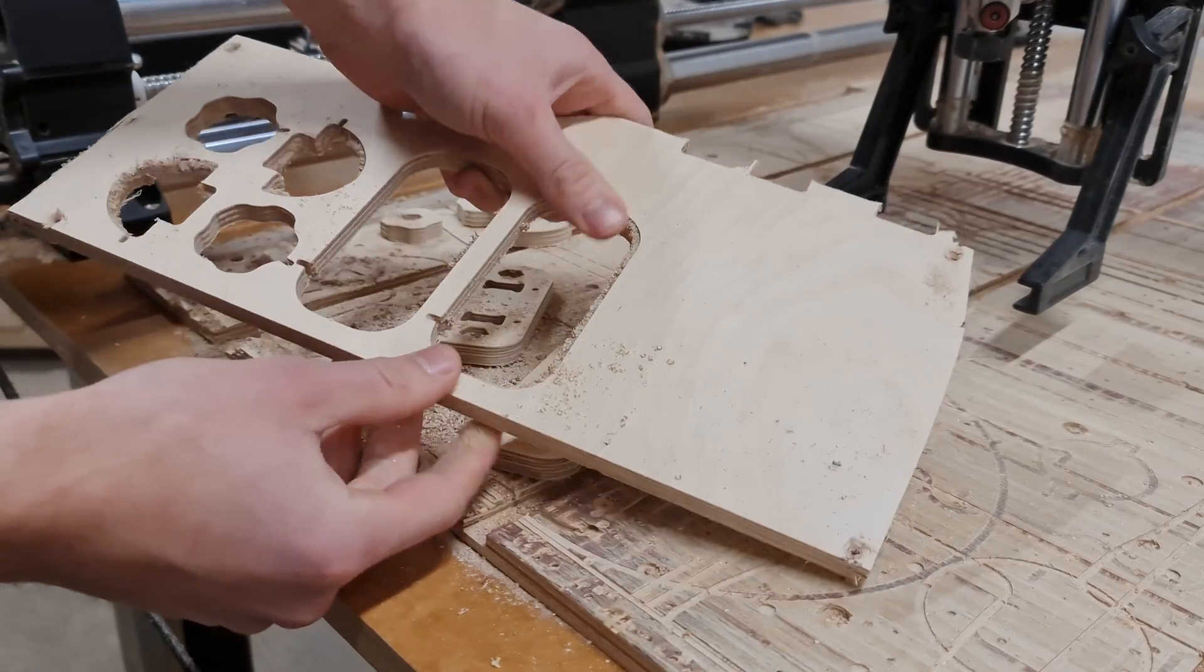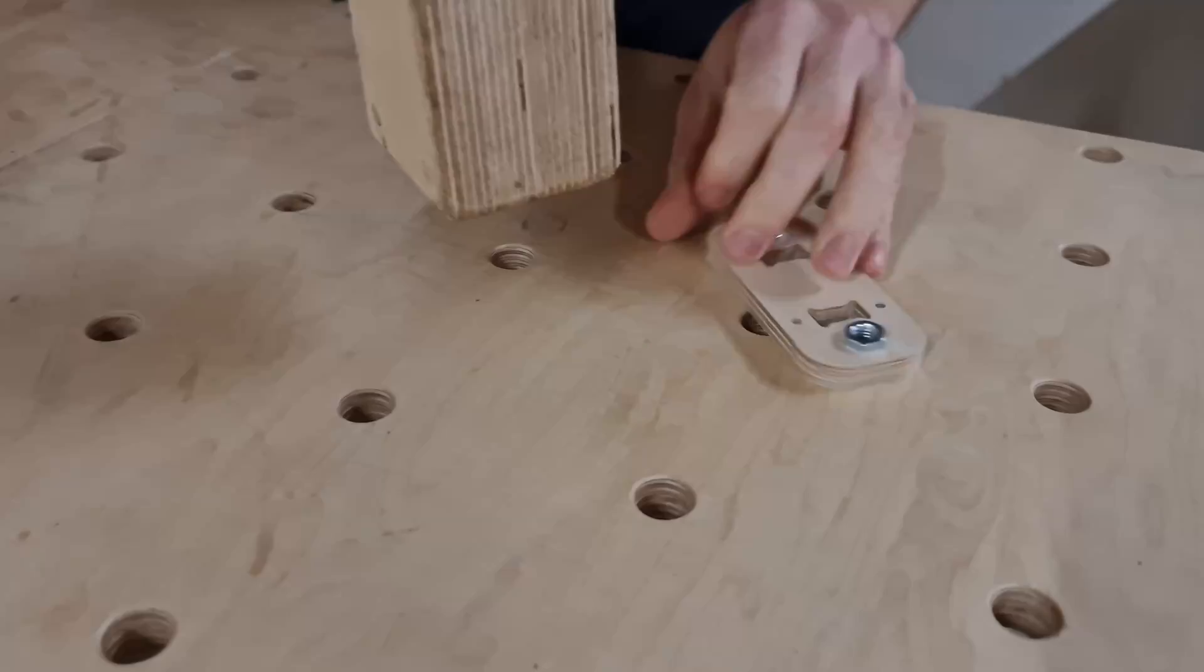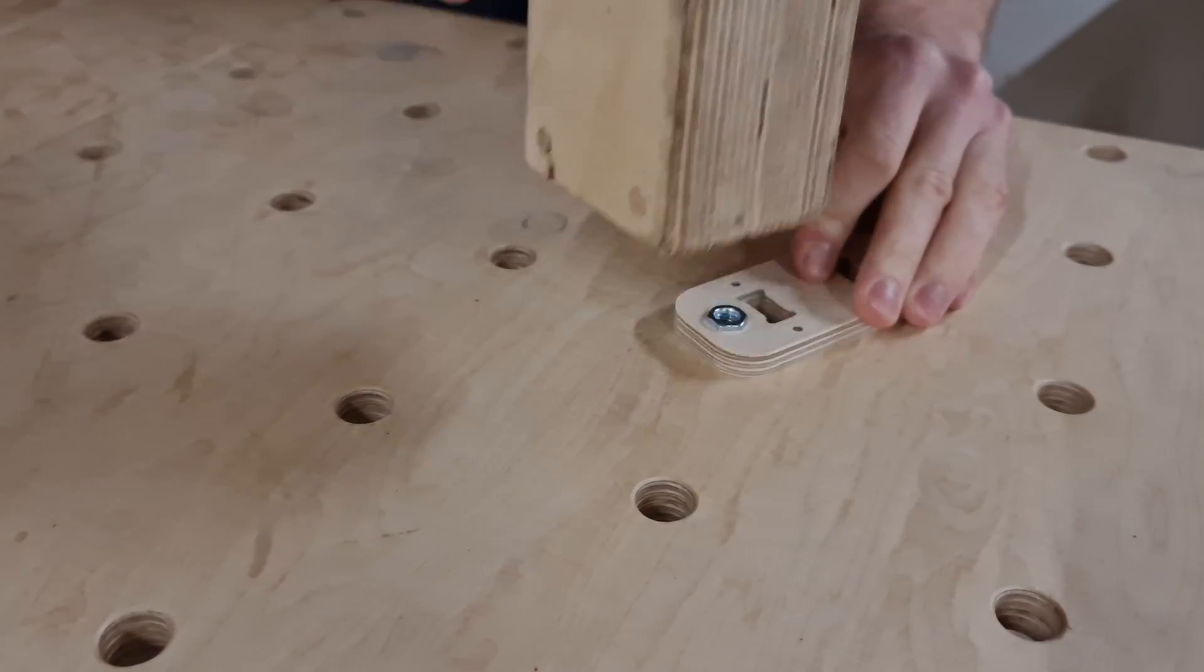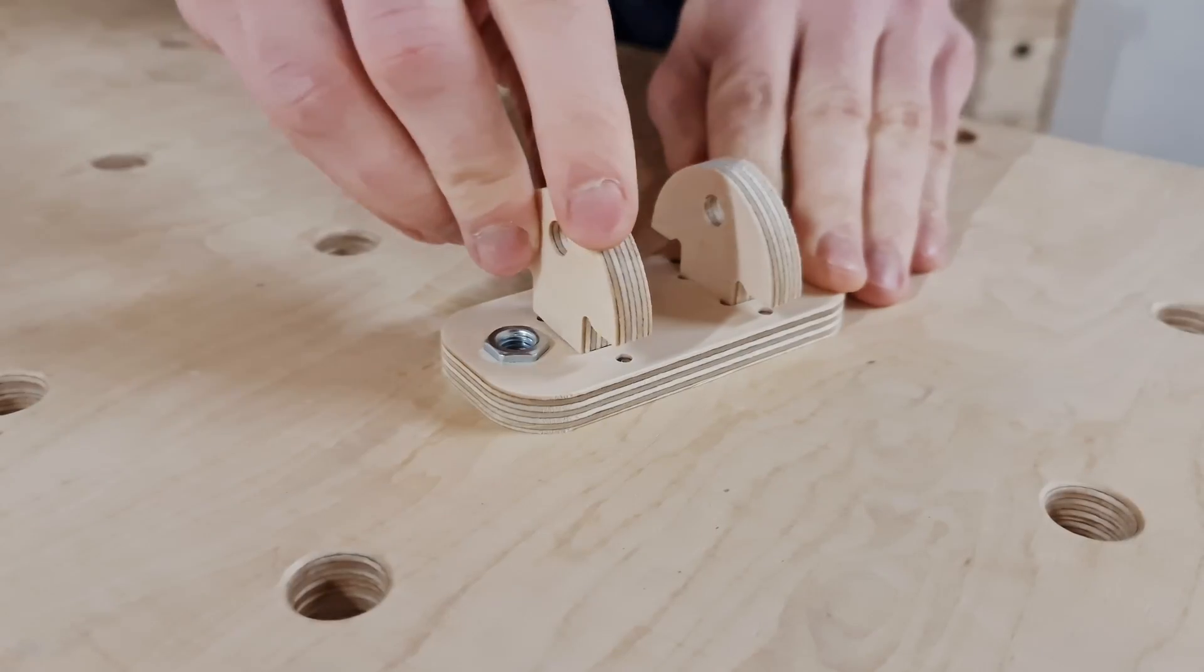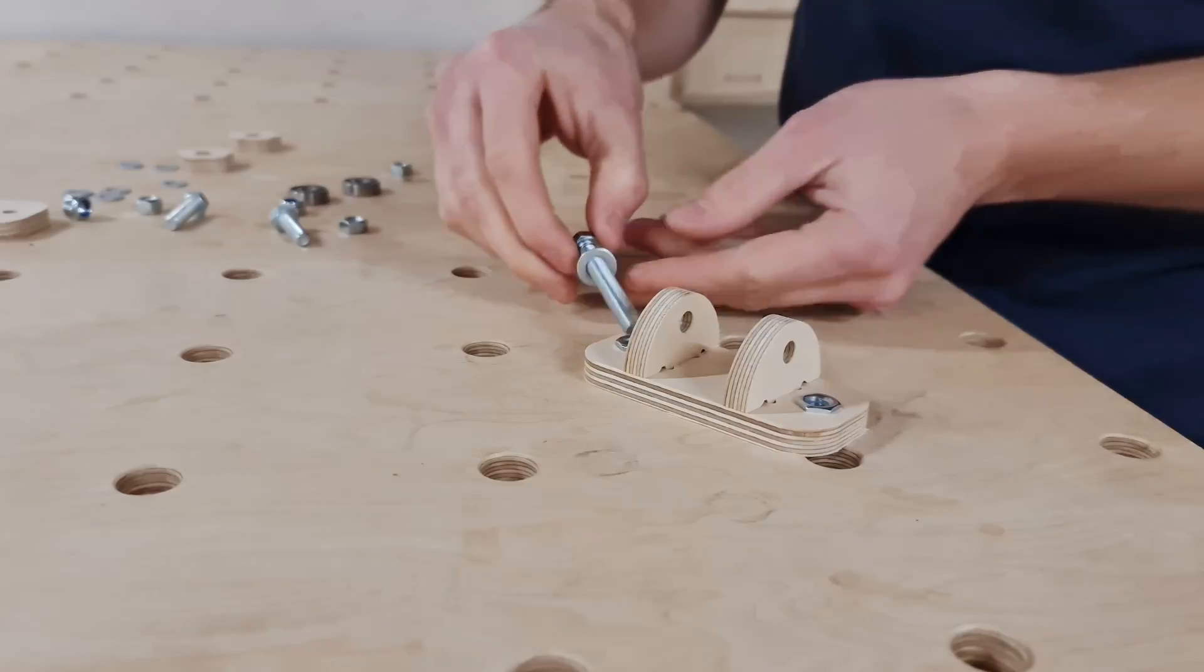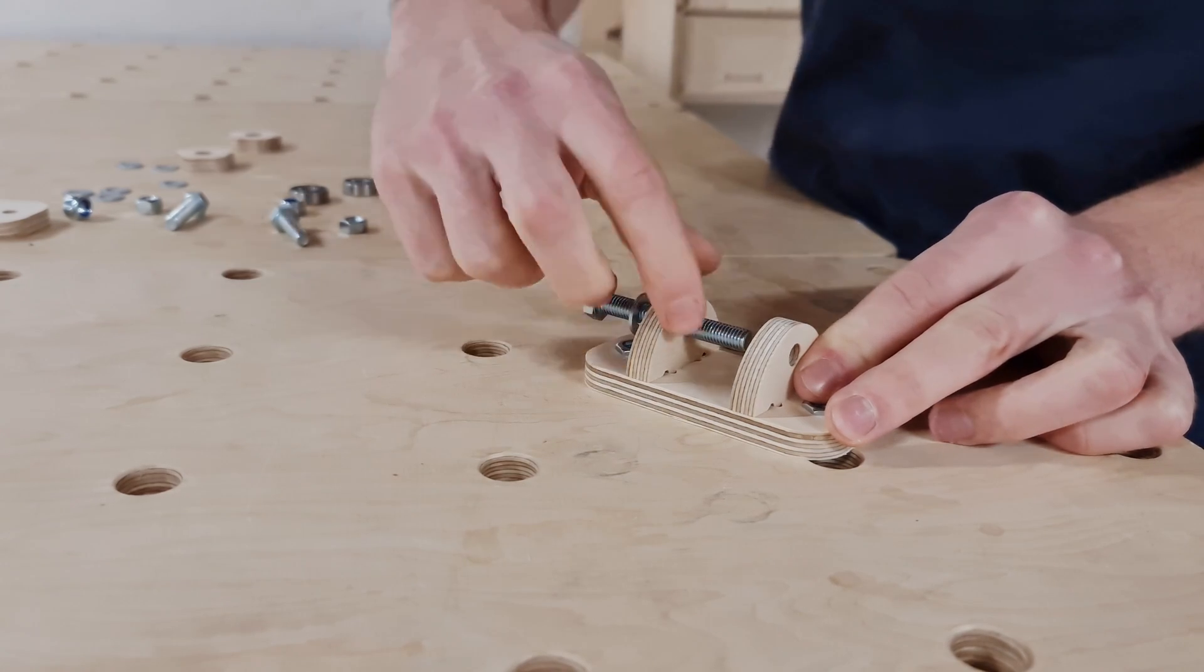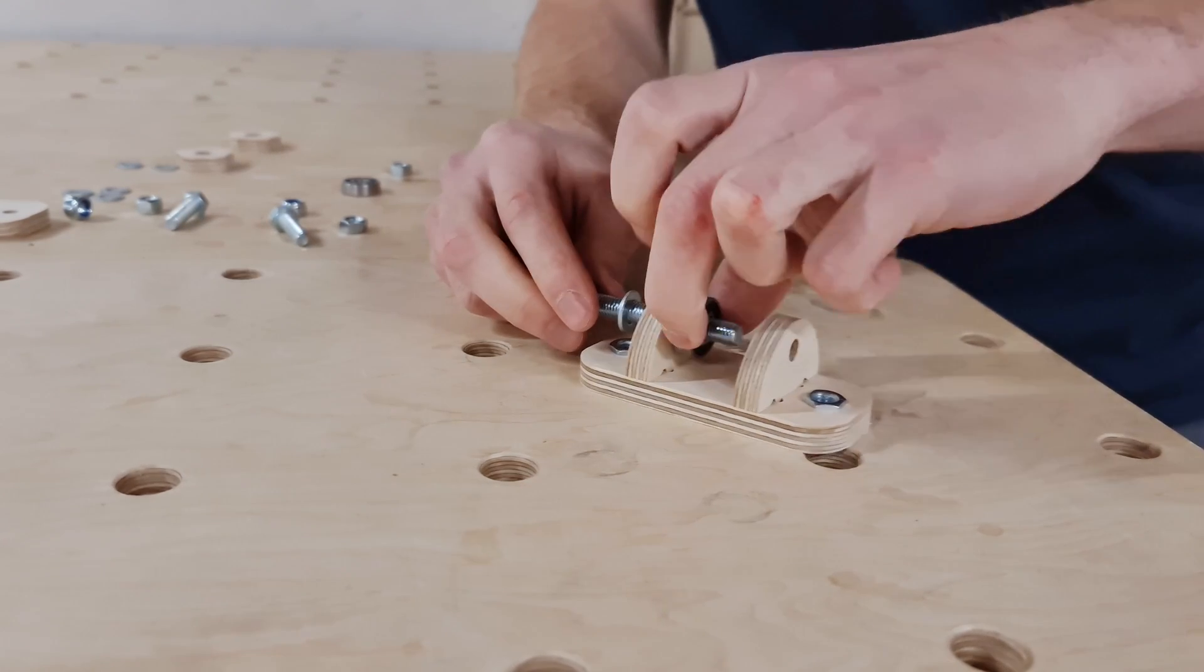Anyway, we have the parts for the chisel sharpening jig and we can start assembling it. As the first thing I installed the nuts in the base panel and attached the bearing access supports. And then I proceeded with installing the M8 screw and attaching the washers, bearings, and hex nuts.